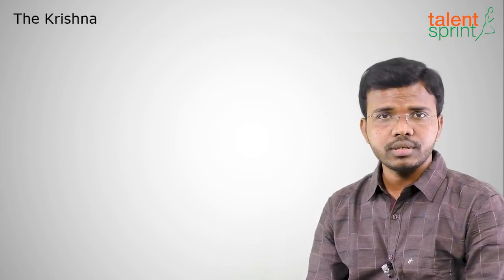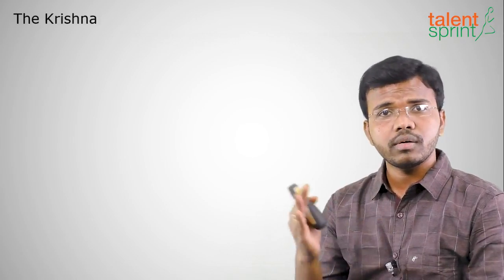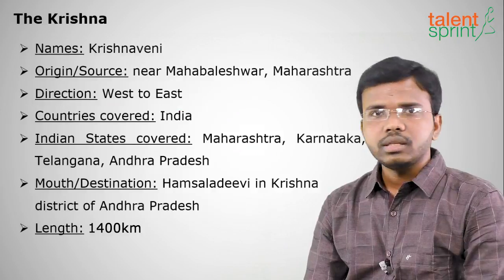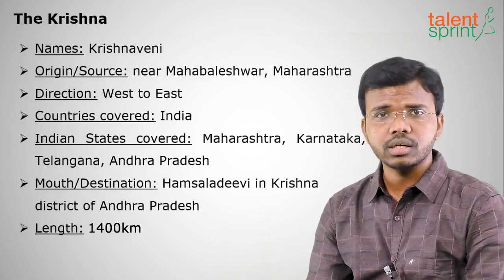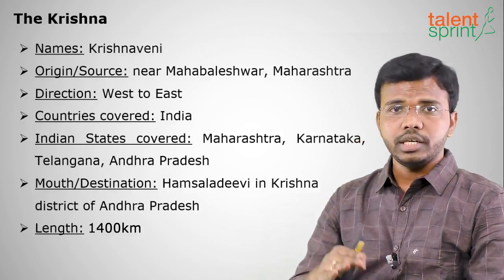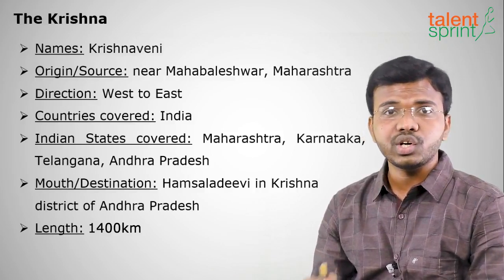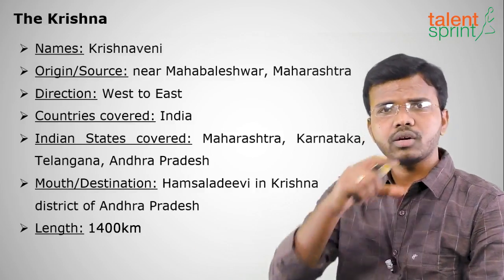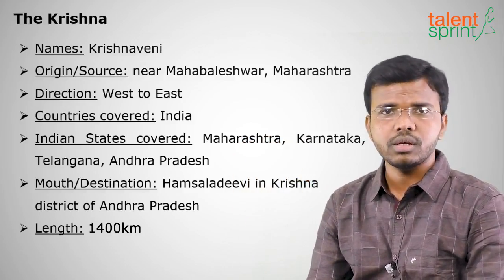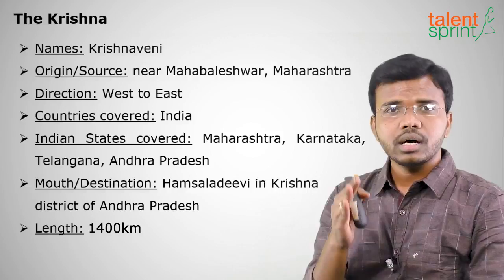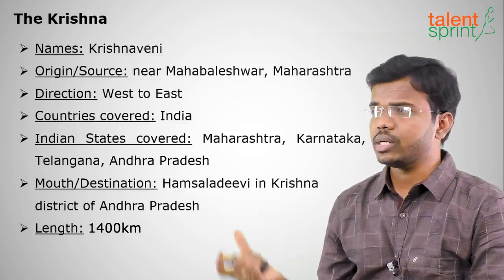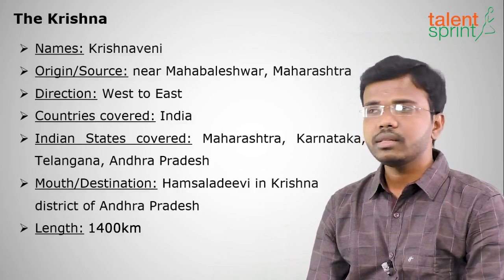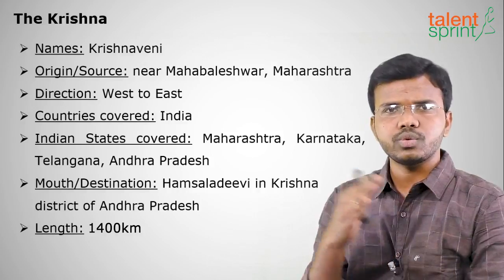Next is the Krishna, the third longest river after Ganga and Godavari. Other names are Krishnaveni or Krishna. Its origin is near Mahabaleshwar in Maharashtra and its mouth is at Hamsaladeevi in Krishna district of Andhra Pradesh. States covered are Maharashtra, Telangana, Karnataka, and Andhra Pradesh. The length is around 1,300 kilometers, flowing west to east towards the Bay of Bengal.